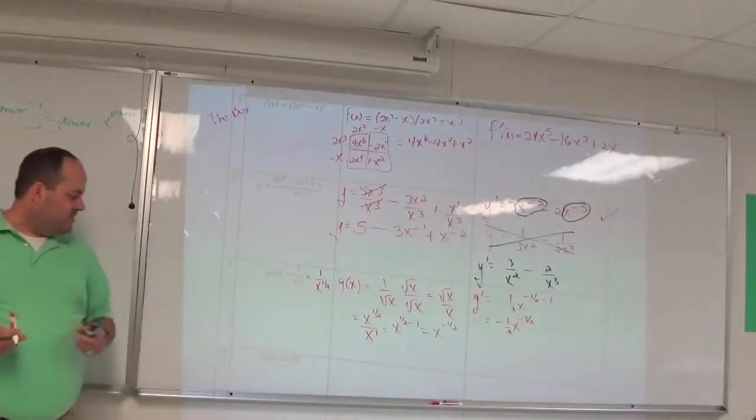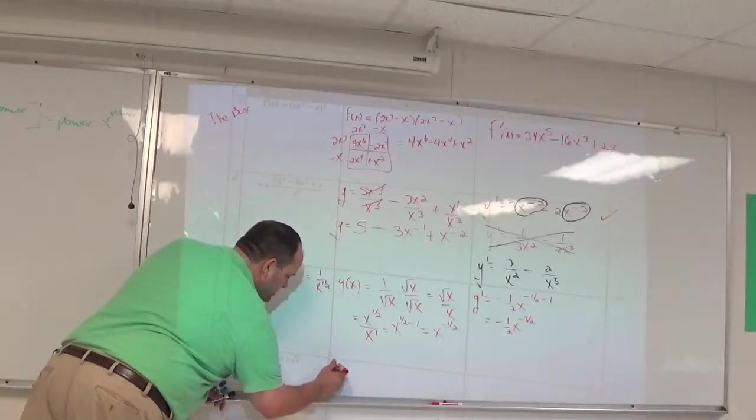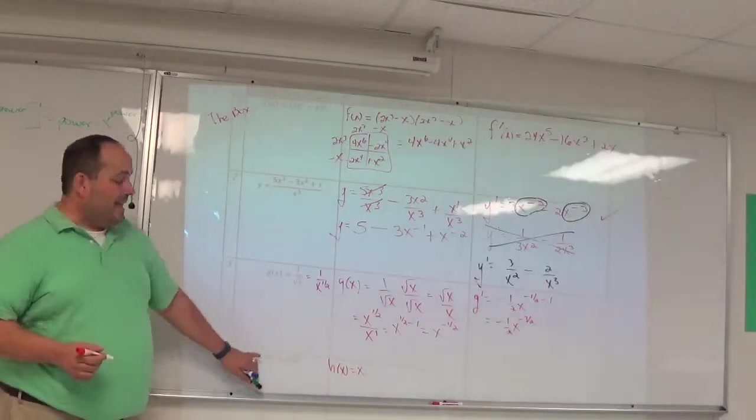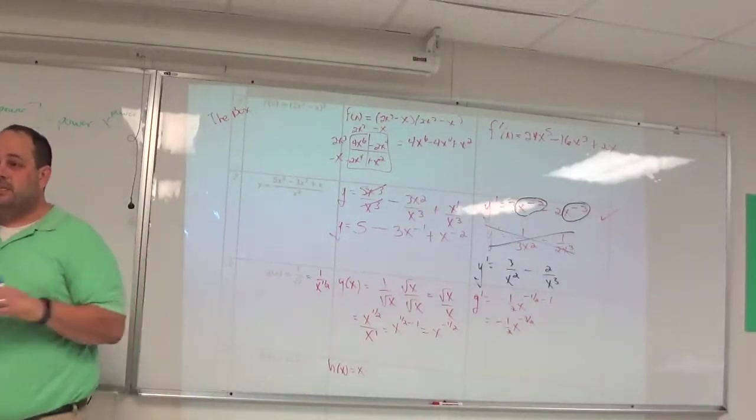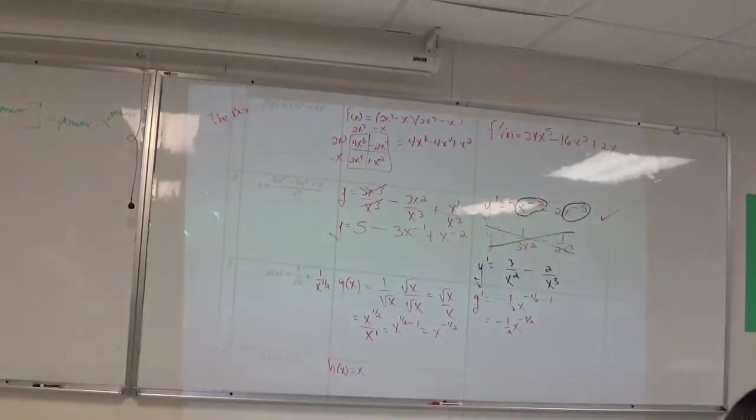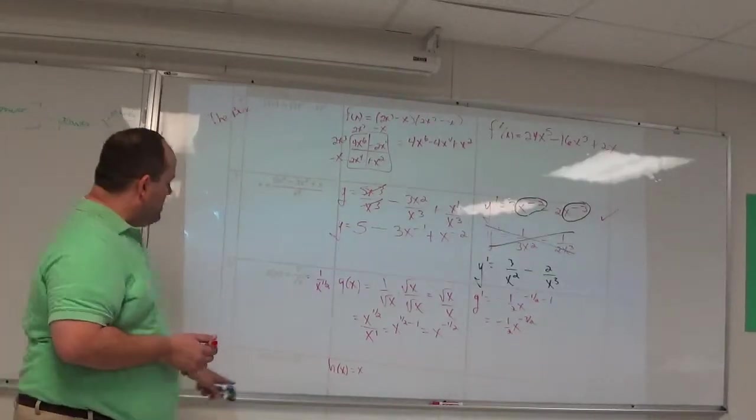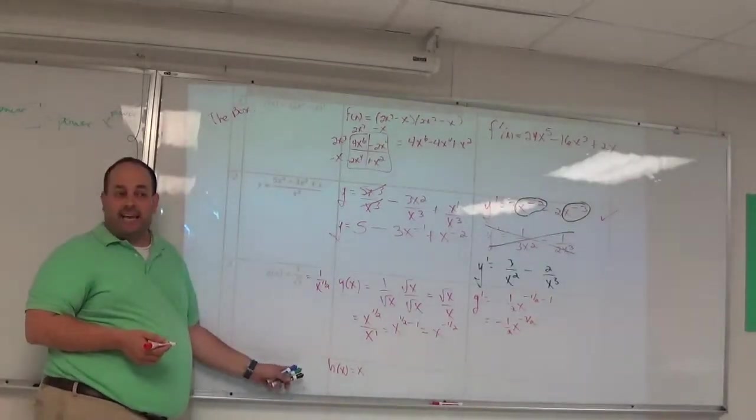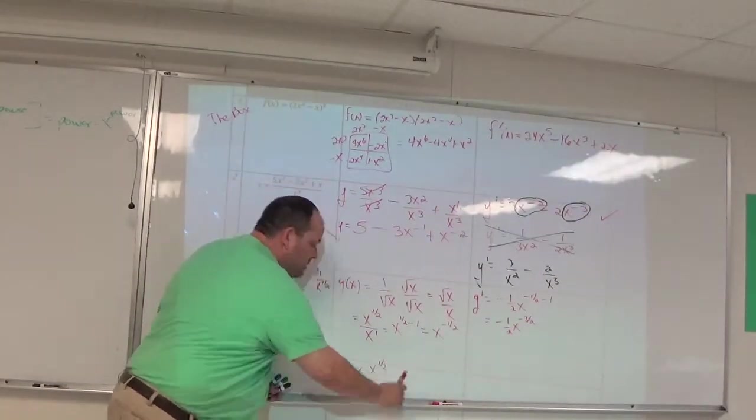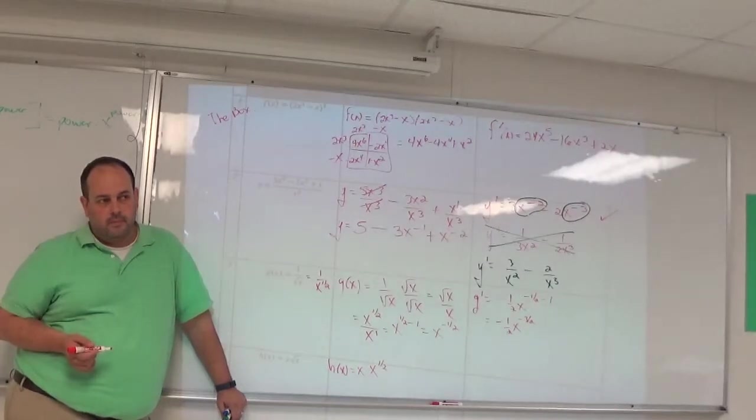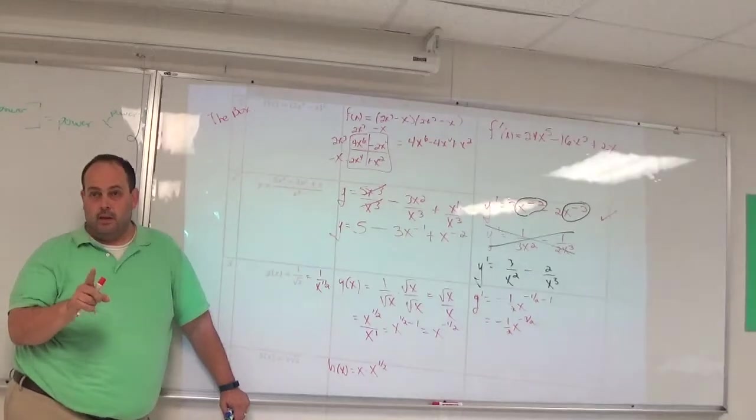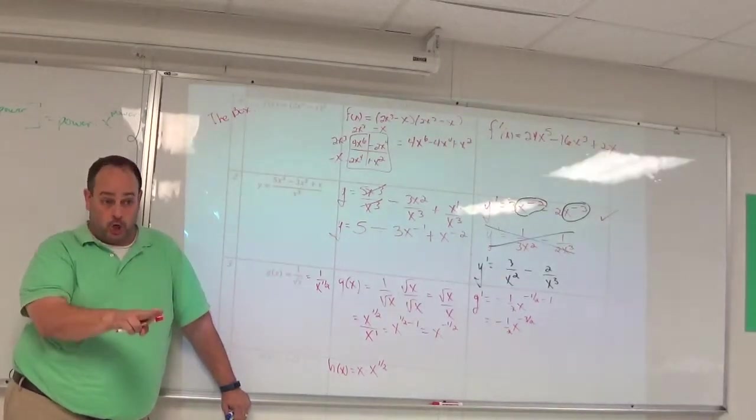Number 4, H of X is equal to X times the square root of X. Right now, we still have no rules, no way to work with multiplication and division, powers only. But X times the square root of X, I can write this in a different way. How about X times X to the one-half power? First question, is this legal? Yes. Second question, is it better? Yes.